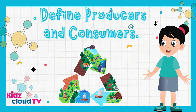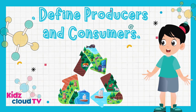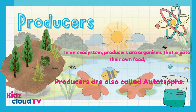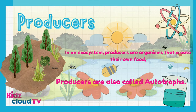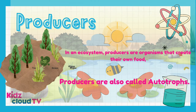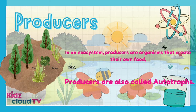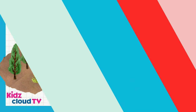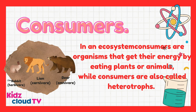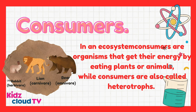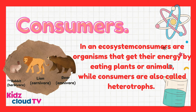Producers and Consumers: In an ecosystem, producers are organisms that create their own food, also called autotrophs. Consumers are organisms that get their energy by eating plants or animals, also called heterotrophs.